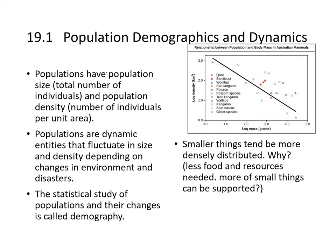Populations have a total number of individuals, which we refer to as population size, and that can be expressed in terms of population density, or number of individuals per unit area. Populations are dynamic entities that fluctuate in size and density depending on changes in environment and disasters.